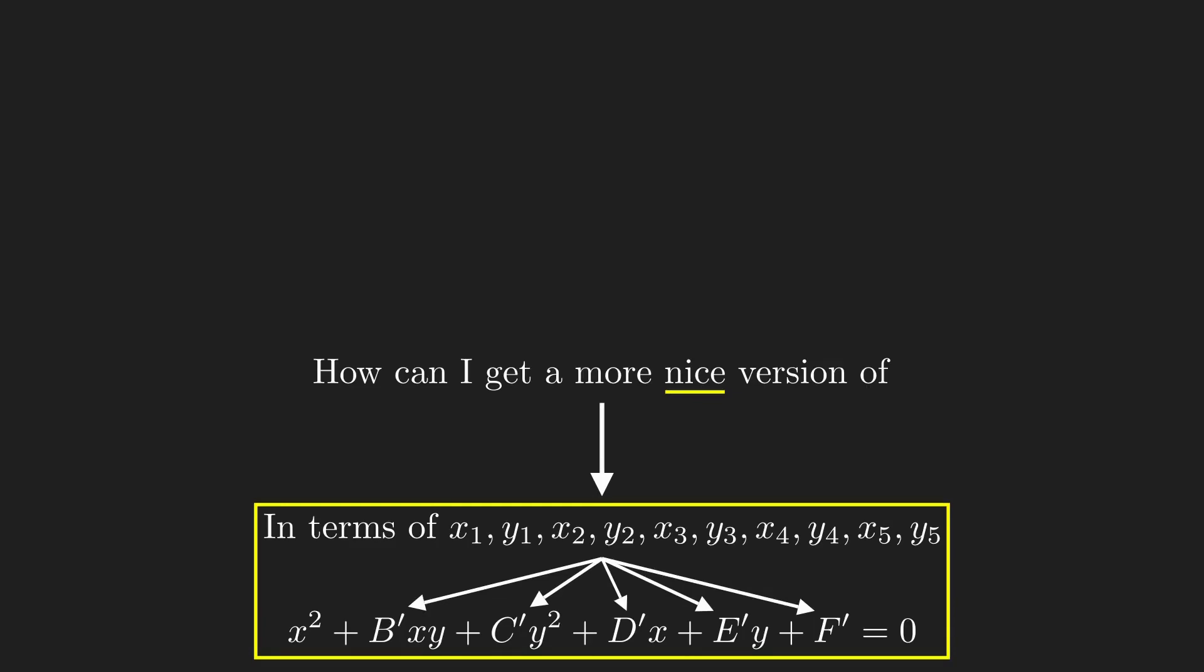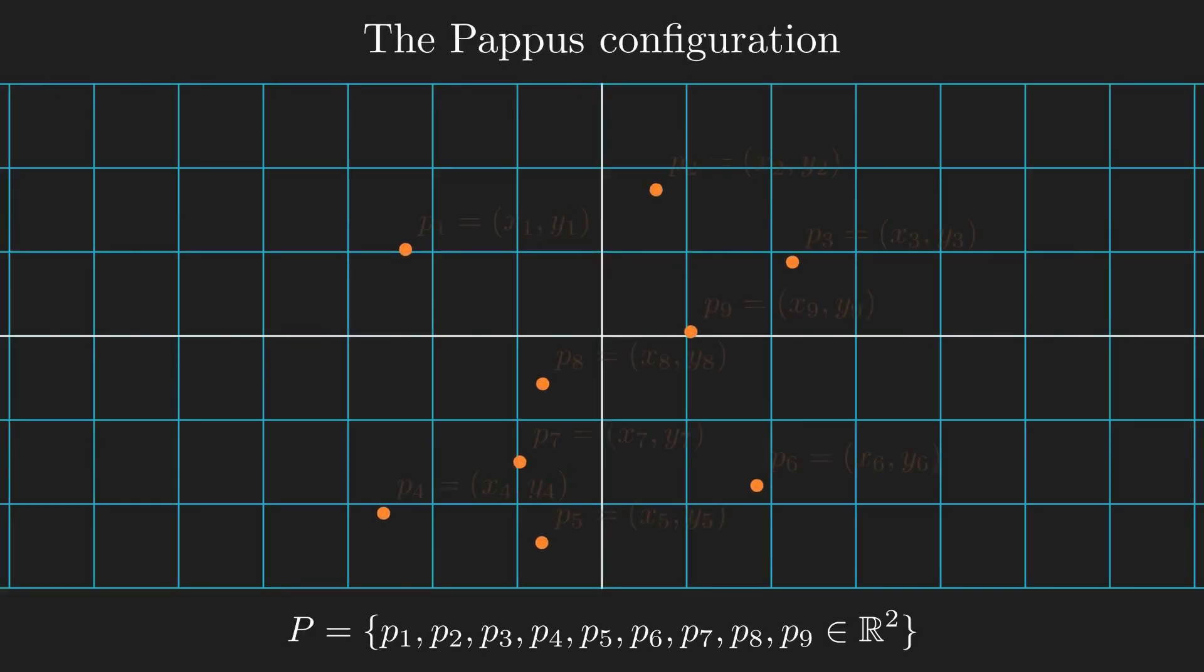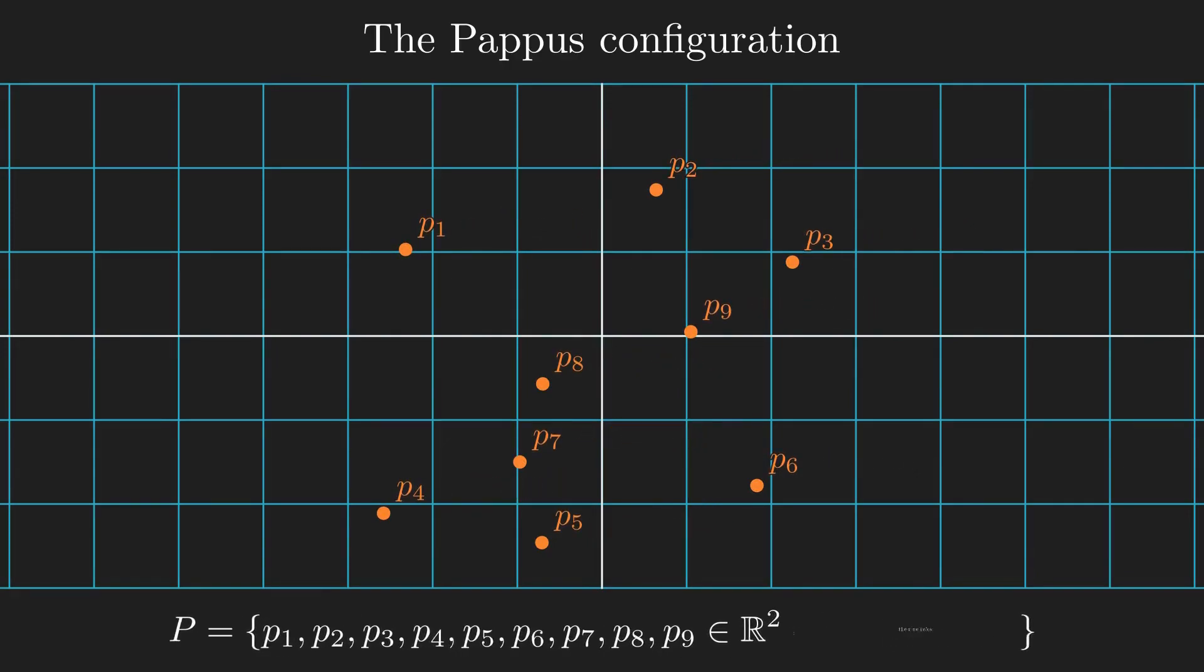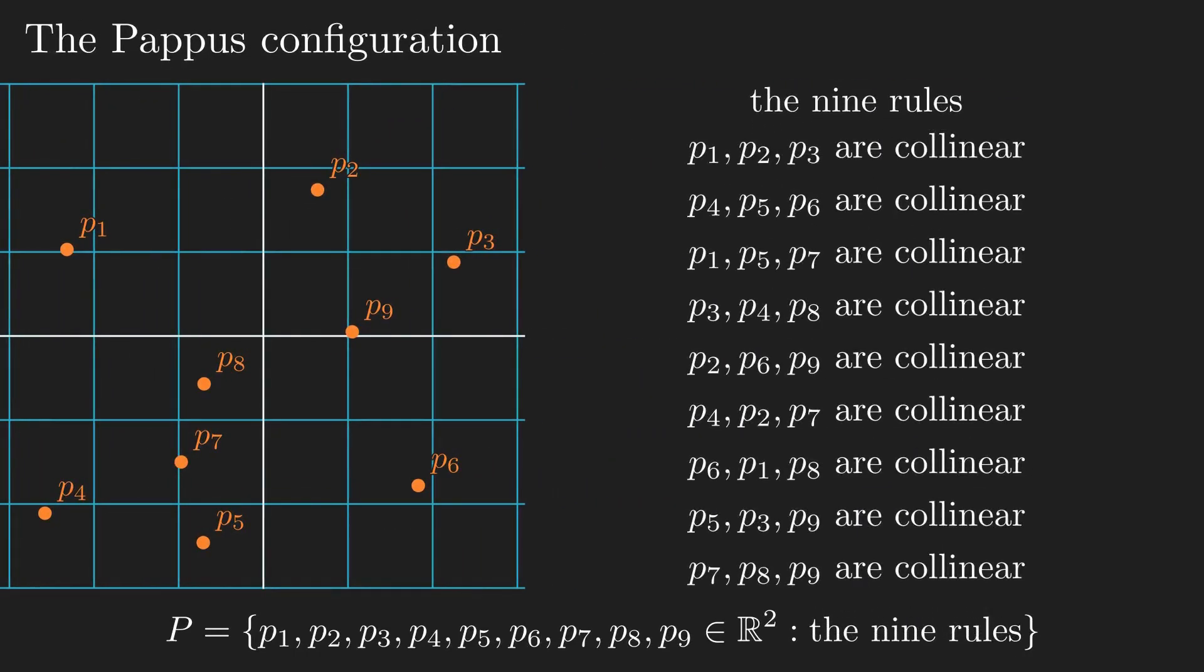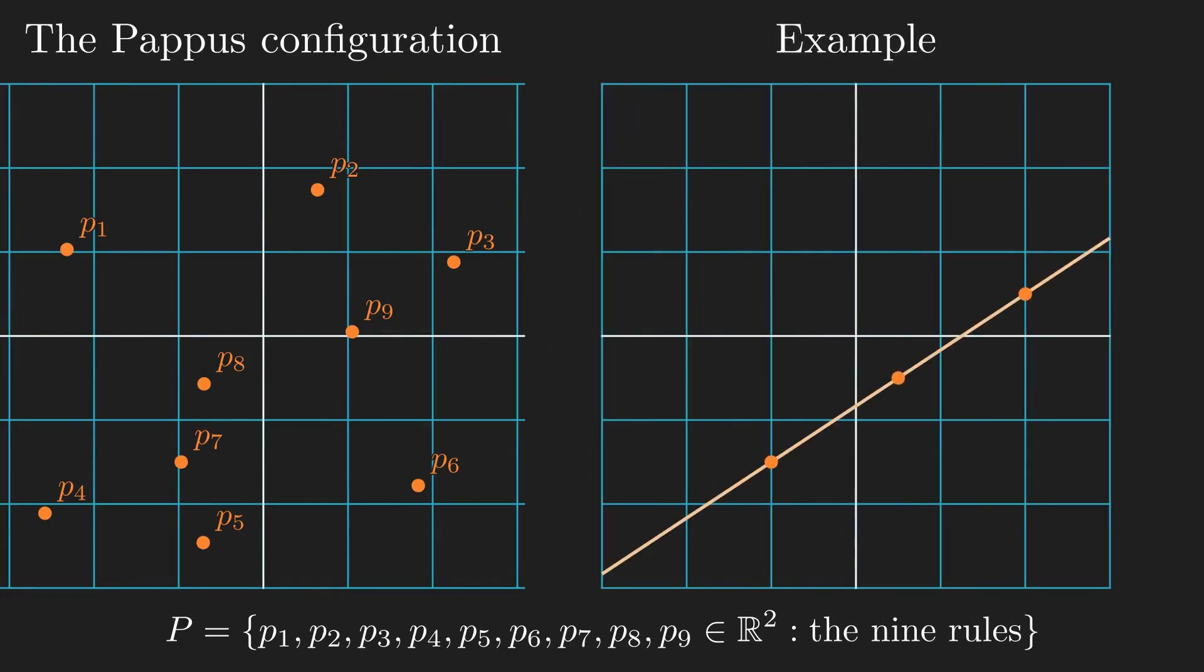To answer that, I'll look at another collection of points in something called the Pappus configuration. The Pappus configuration consists of a set of nine points anywhere on the plane. However, they must follow nine rules that restrict their positions relative to each other. Each rule demands that three certain points are collinear.